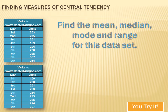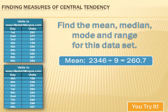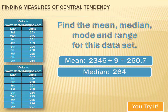Now we can apply statistics. The mean is the total of all data entries divided by the number of data entries — in this case, 2346 divided by 9, or 260.7. To calculate the median, since there are nine values, the middle is the fifth value with four above it and four below it. That fifth value, right in the middle, is 264.